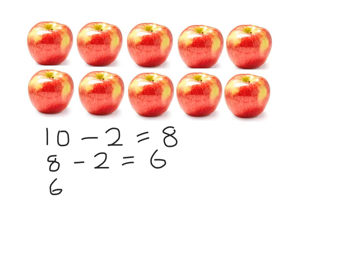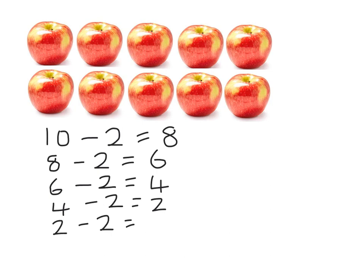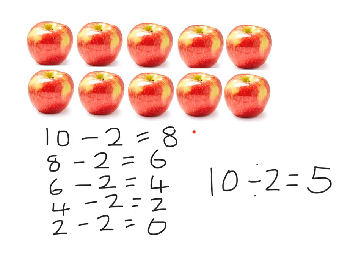Now I have got six apples — take away another two equals four. Four apples take away another two equals two. And two apples take away two equals zero. If I have a look at how many times I took away, I can see that I took away two — one, two, three, four, five times. So I know that ten divided by two equals five, because I took away two five times.